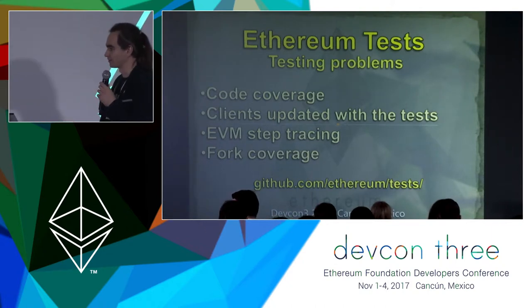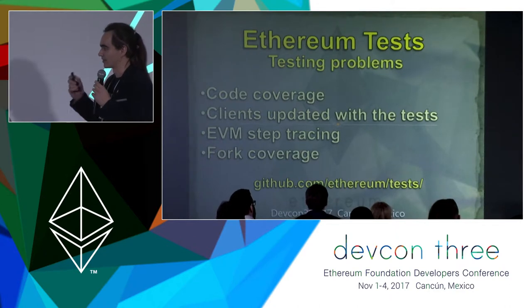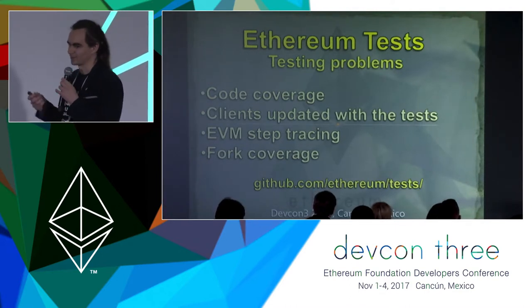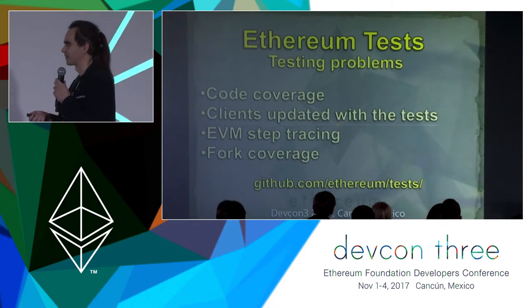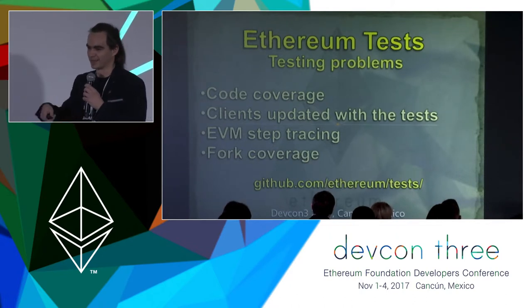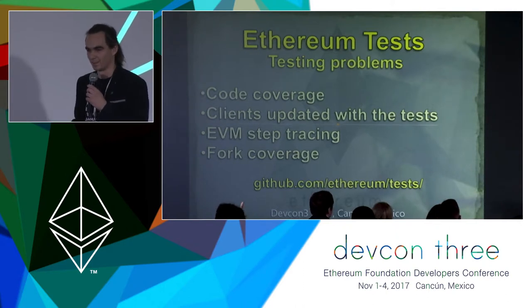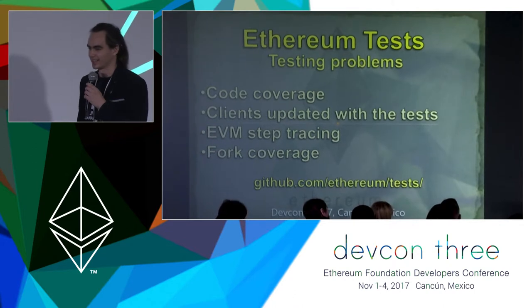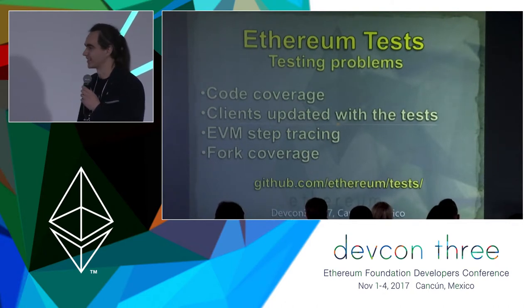We had a couple of problems. The first problem is to create an ultimate test suite that covers all possible situations and finds all bugs and consensus issues. The second problem is that clients should execute our tests. Because we required clients to implement a custom tool, I had to manually ask every client developer: have you run this test? Have you updated the test repository? One time I discovered that the Go client wasn't running the recent tests for about half a year — there had already been a hard fork and they still hadn't caught up. Not to mention I don't know the status of other clients.